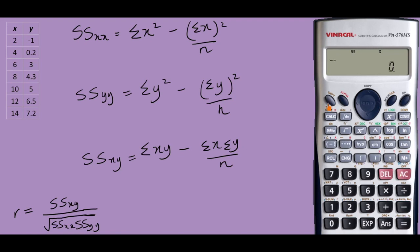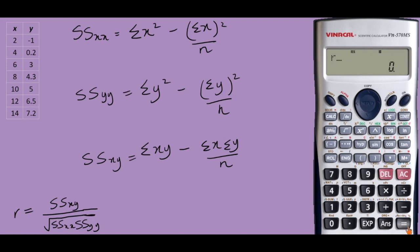To get the value of the sample correlation coefficient r, simply press Shift 2, then move to the right-hand side by pressing the arrow twice. Select 3 for the correlation coefficient, and we get r equal to 0.9829.